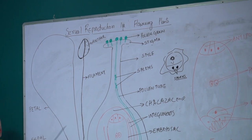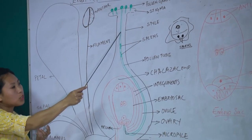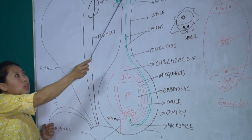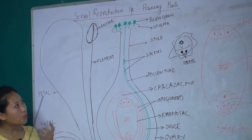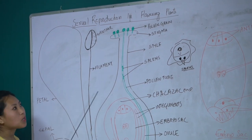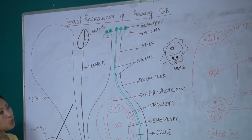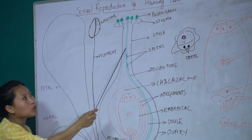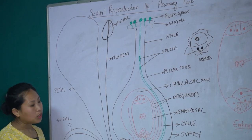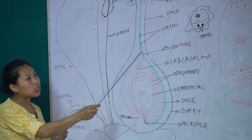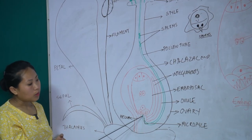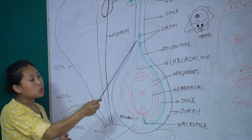Upon landing on the stigma, in order for the sperms to reach the egg, the pollen grains must germinate. They have to germinate and travel all the way through the style to reach the egg inside the embryo sac. The pollen grain absorbs the sugary substances present on the stigma and germinates by putting out tubes known as the pollen tube.